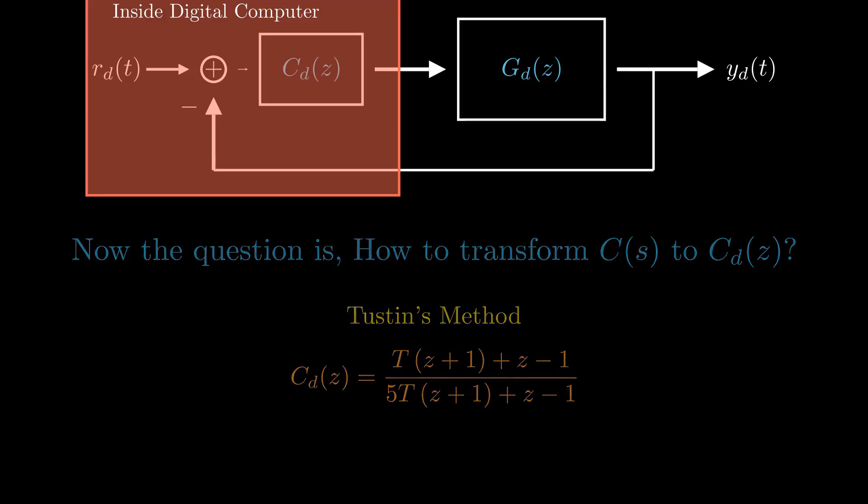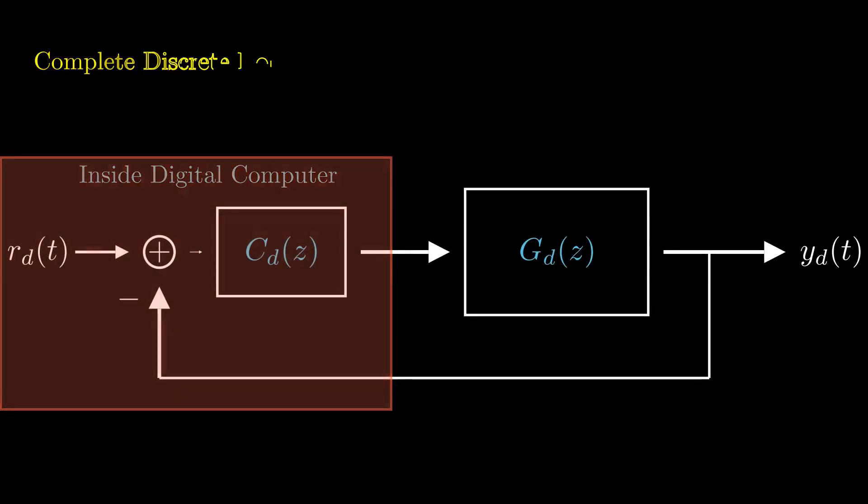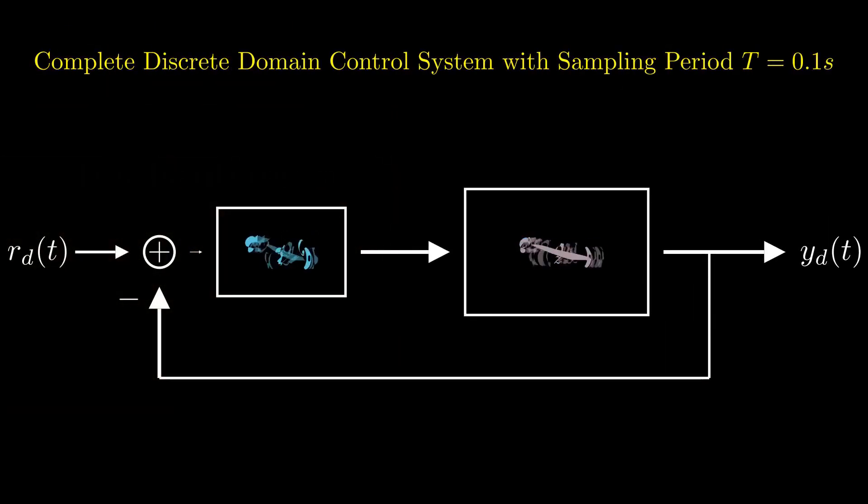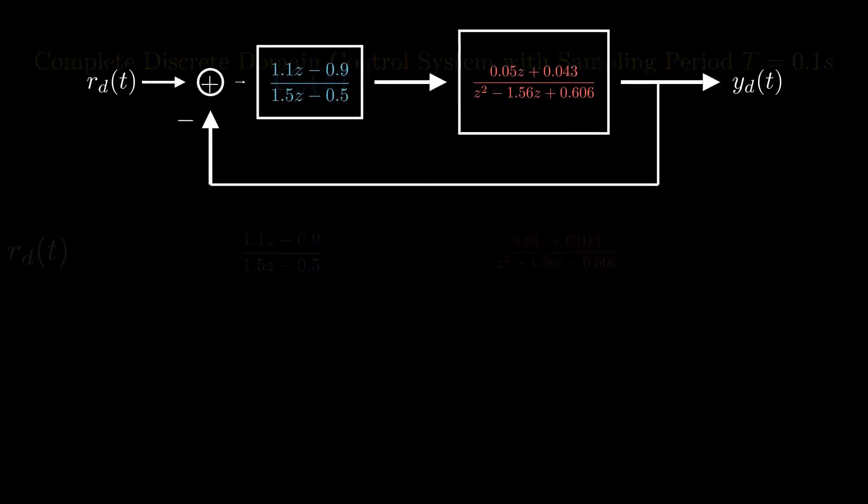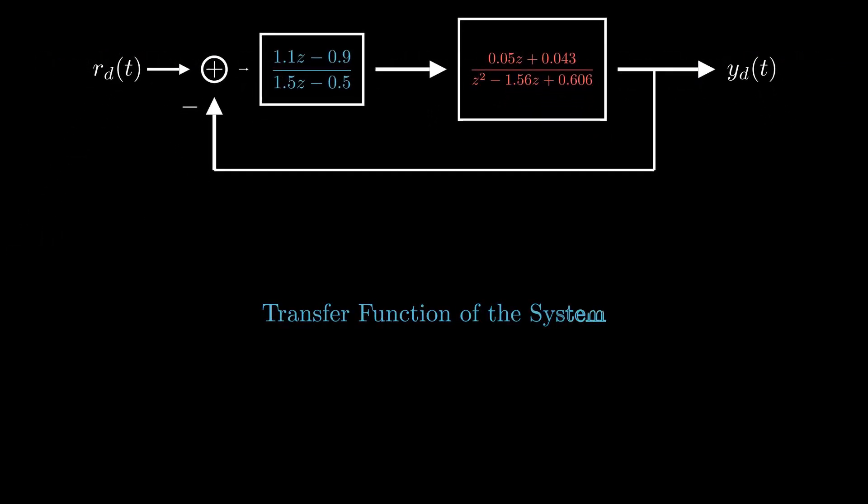By solving the relationships obtained above for a sampling period of 0.1 seconds, we can derive the complete discrete domain control system as follows. Now the transfer function of the discrete time control system is C_D(z) times G_D(z) divided by 1 plus C_D(z) times G_D(z) and can be further simplified as follows.